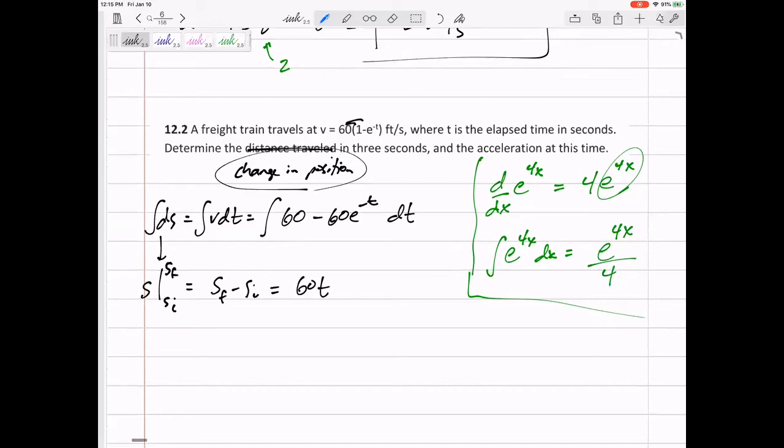The integral of negative 60e to the negative t. I'm leaving it as e to the negative t. But I need to divide by the derivative of that exponent negative t. So, all right. This just becomes plus.